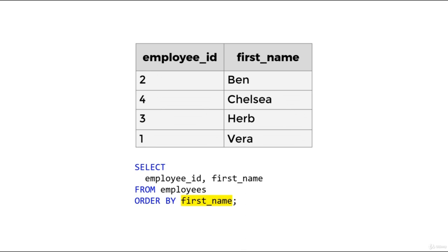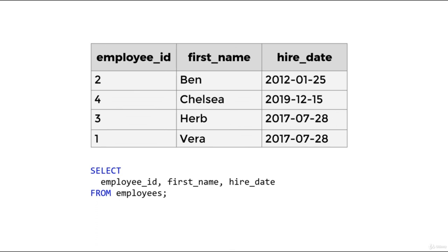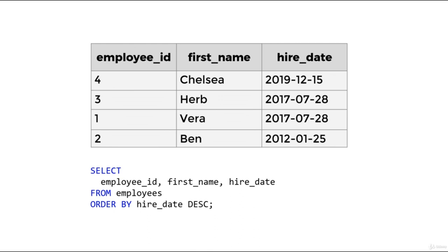Let's look at an example where we are sorting a date data type column. Let's say we wanted to order the employees by hire_date and show the most recently hired employees first. We can do this by ordering by hire_date in descending order. When ordering by a date data type column, I like to remember the saying: later dates are greater dates.